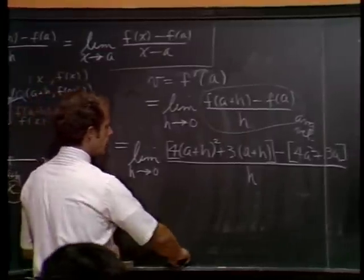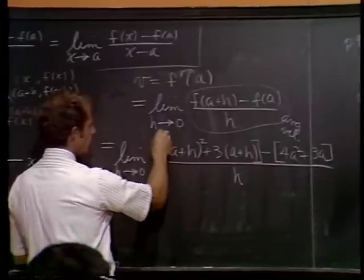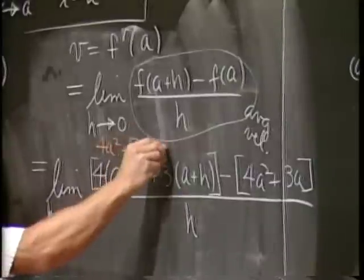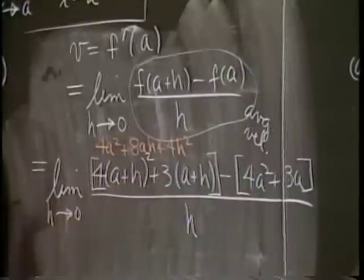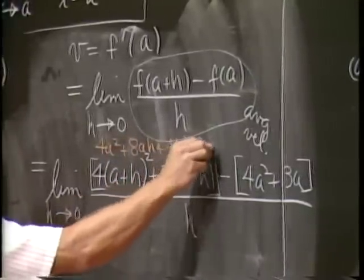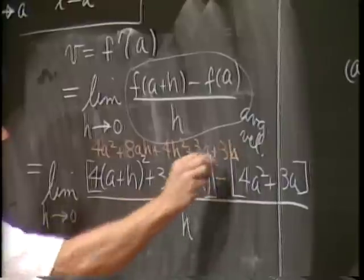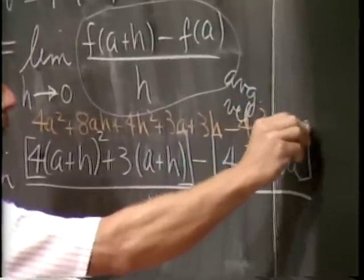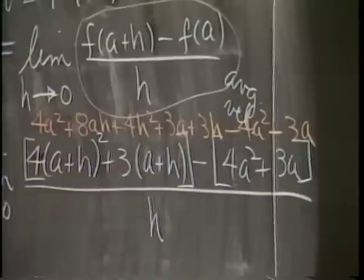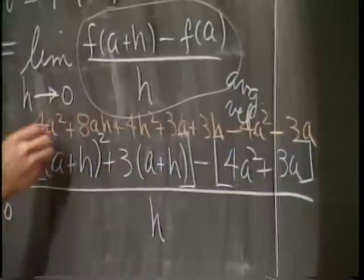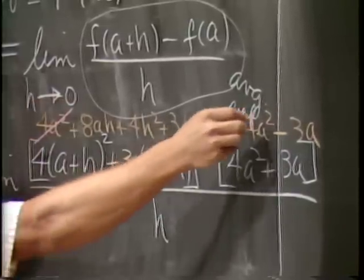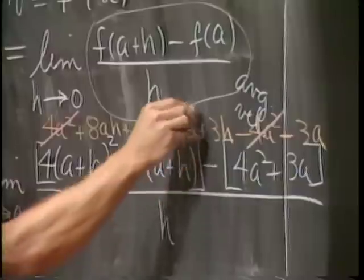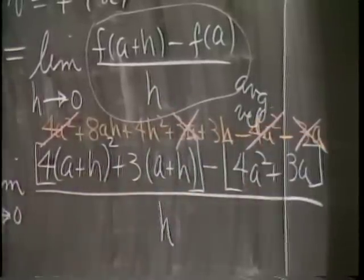OK. Well, let's see how much algebra we can get through. If we expand this out, we'll get 4a squared plus 8ah plus 4h squared. Out of here we get 3a and a 3h. Out of here, 4a squared negative, also negative 3a. I've said before, and I hope it's still true, if it doesn't have an h in it, it's going to have to cancel. Otherwise, I've made a mistake somewhere. So those two terms disappear altogether.